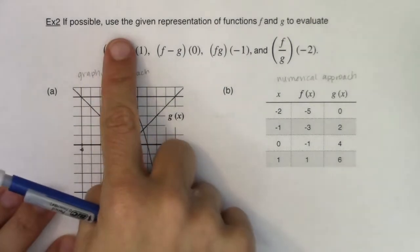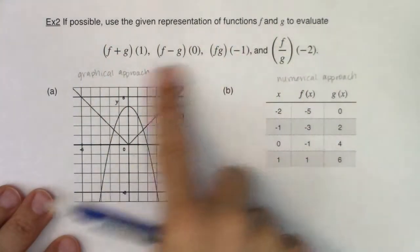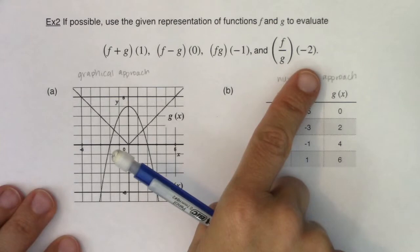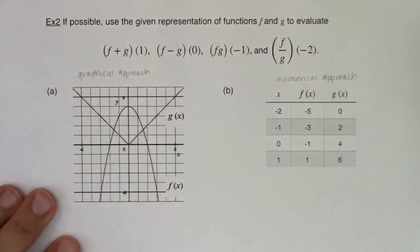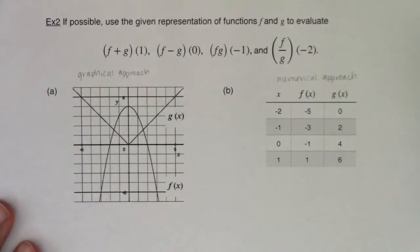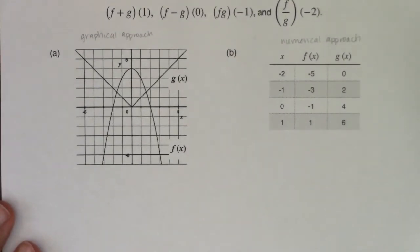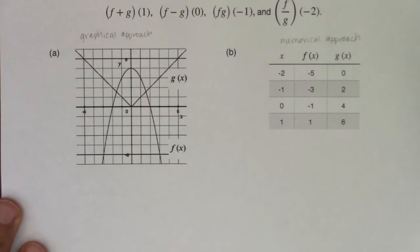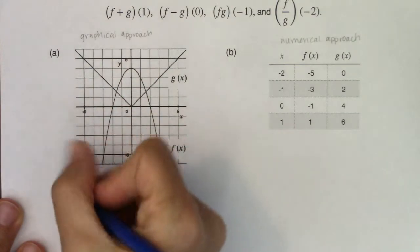I need to use, if possible, the given representation of functions f and g to evaluate these expressions — a sum, a difference, a product, and a quotient. Let's see how much we can get done, because that 'if possible' gives me a hint that something's about to happen. I'm going to move this up so I can get as much of my graph with as much space to work in as possible. Let's do the graphical approach first.